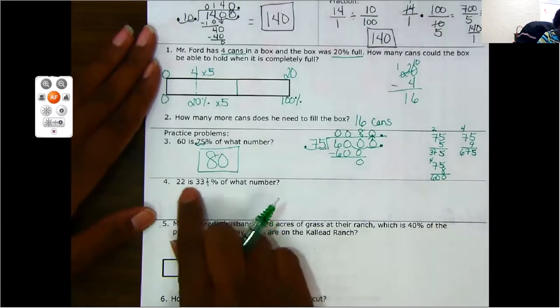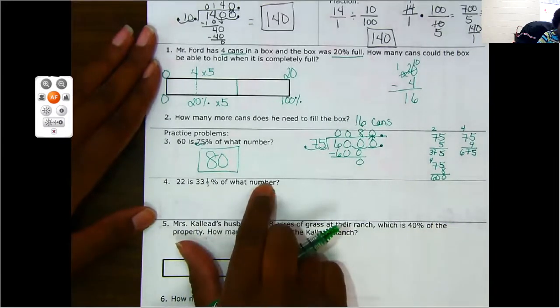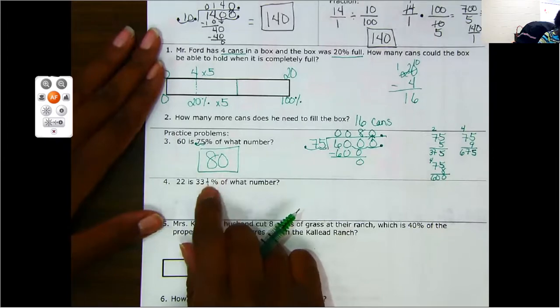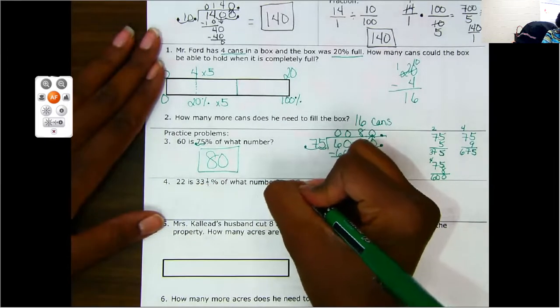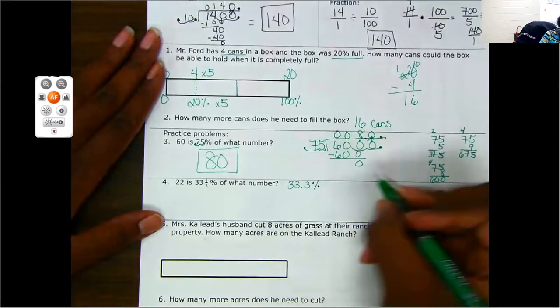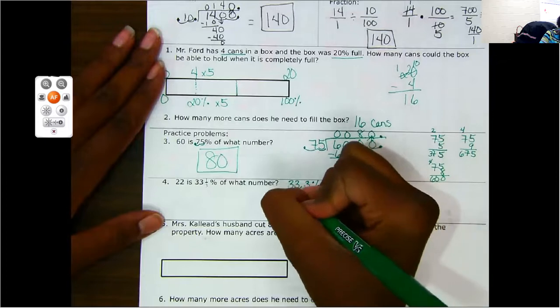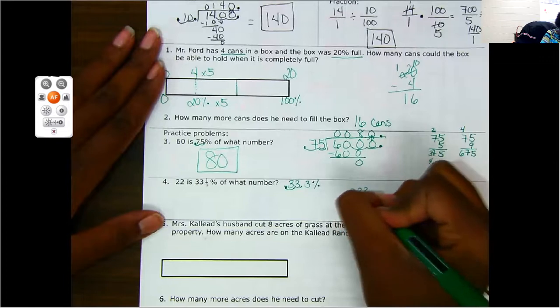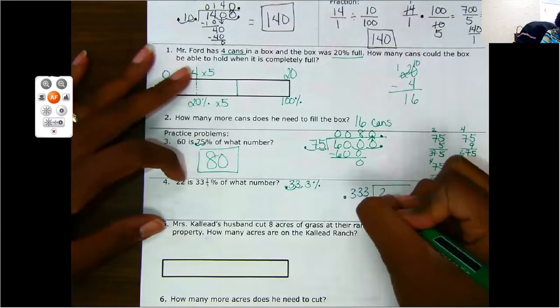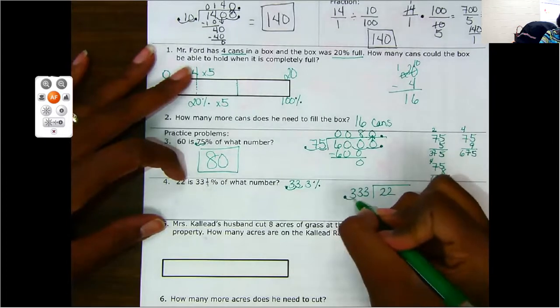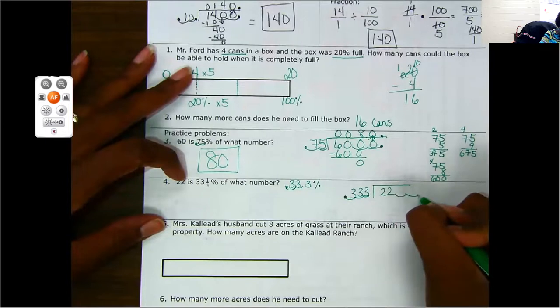Alright. 22 is 33 and one third percent of what number? Ooh, this is funky. I have a fraction in my percent. Remember, a fraction represents a repeating decimal. So this is what it is as a percent. So I need to move it with Dr. Pepper. One, two. So I'm going to put 0.333 divided by 22. I need to move this, kick the ball to the wall. One, two, three. One, two, three. So zero, zero, zero. Decimal, decimal.